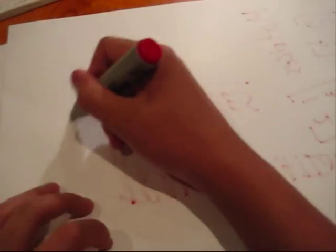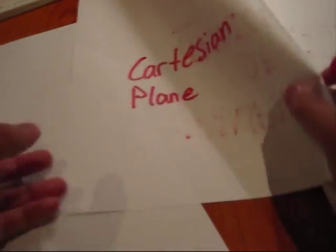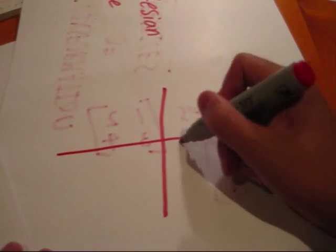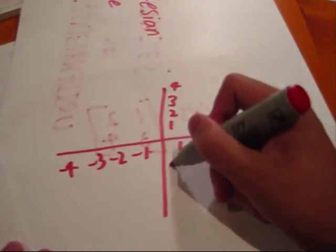We are going to be doing these transformations on a Cartesian plane. Now, a Cartesian plane or Cartesian coordinate system specifies each point uniquely in a plane by a pair of numerical coordinates.